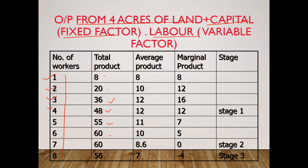For average product: 8 divided by 1 equals 8; 20 divided by 2 equals 10; 36 divided by 3 equals 12; 48 divided by 4 equals 12; and so on. For marginal product — what that specific labor unit is contributing: when total product is 8, marginal product is also 8. Then 20 minus 8 gives marginal product of 12. Then 36 minus 20 gives 16. Then 48 minus 36 gives 12. Then 55 minus 48 gives 7. Then 60 minus 55 gives 5. Then 60 minus 60 gives 0. And 56 minus 60 gives a negative value, minus 4.